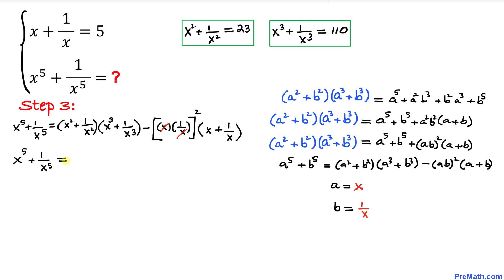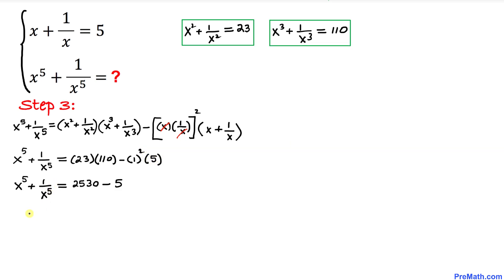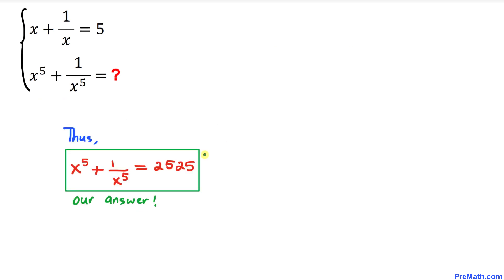Substituting these values, we get 23 times 110, minus 1 squared times 5. This gives us 2530 minus 5, so our x power 5 plus 1 over x power 5 value turns out to be 2525. That is our final answer.